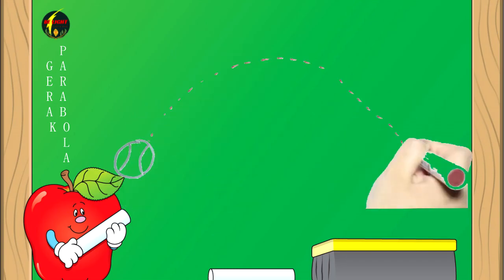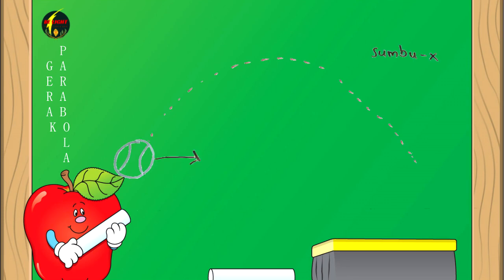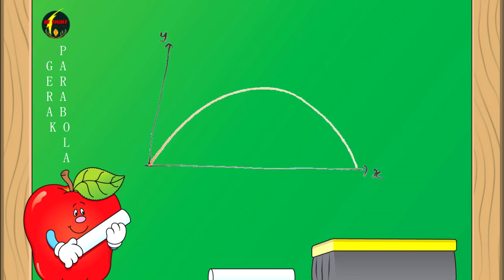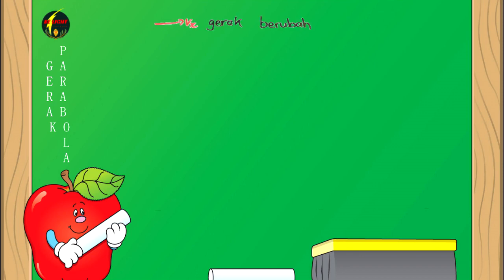Seperti telah disebutkan, gerak parabola memiliki sumbu X dan sumbu Y. Perhatikan gambar berikut. Dalam suatu titik tertentu terdapat kecepatan yang terdiri dari komponen VX dan VY. Gerak pada sumbu X adalah gerak lurus beraturan.